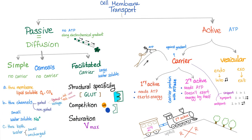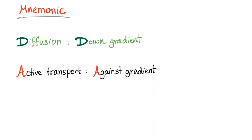Cell membrane transport. Passive or active. Passive is simple diffusion which means no energy, no carrier. Osmosis, same thing - no energy, no carrier. Facilitated: no energy but we need carrier. Passive diffusion is along the electrochemical gradient. Active diffusion is against the electrochemical gradient, that's why we need ATP. Here's a mnemonic: Diffusion, down gradient, that's why it's passive, doesn't need ATP. Active transport, against the gradient, and this is active so it needs ATP.